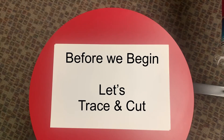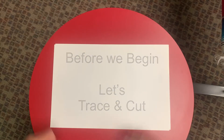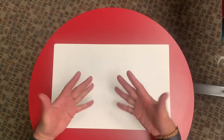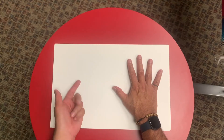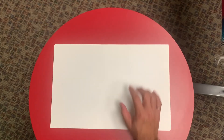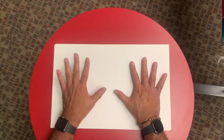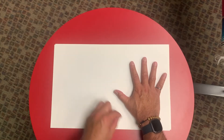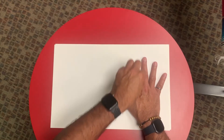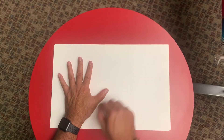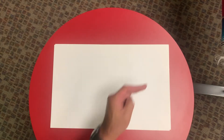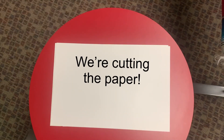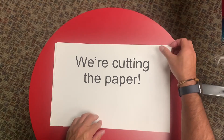In learning this math trick, we could use our hands, but instead of using our hands, what we're going to do is grab some paper — any color — and we're going to place our hands on top of it and trace both our right hand and our left hand, get some scissors, and cut them out. And as soon as we cut them out, this is what we would get.